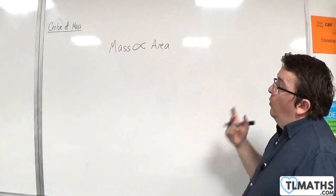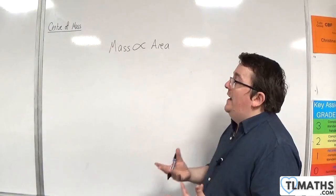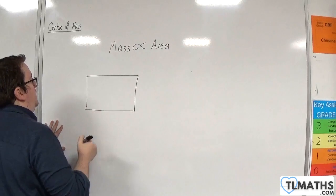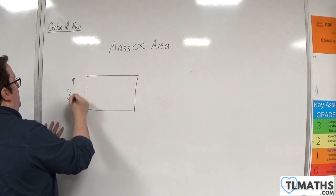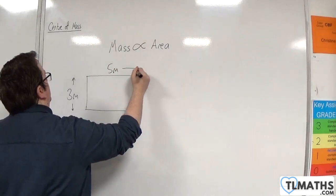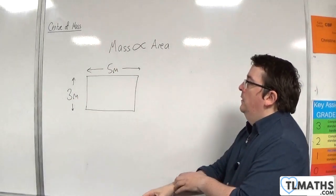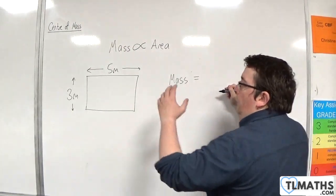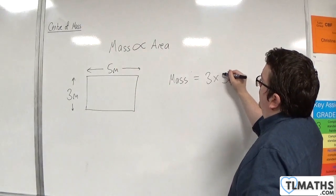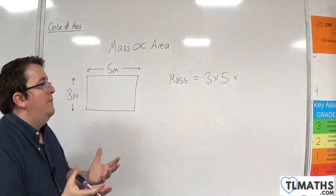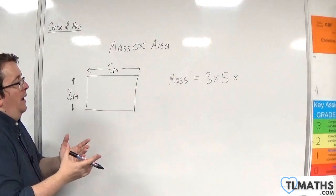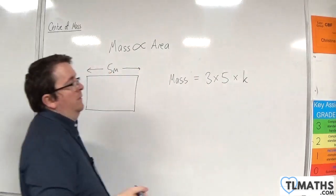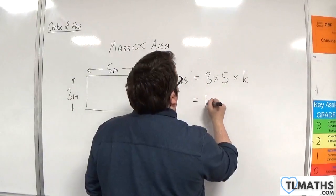So what that means is that if you had a rectangular laminar with a height of 3 meters and a width of 5 meters, let's say, then we could write its mass as 3 times 5 times something. Whatever the mass per square meter actually is, we could refer to that as k. So its mass would be 15k.